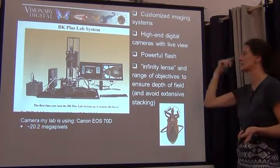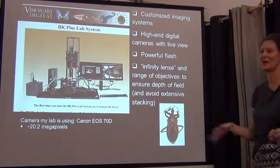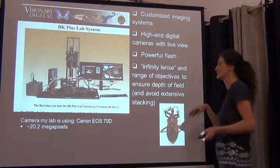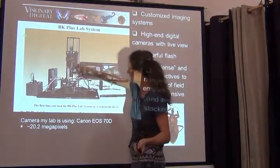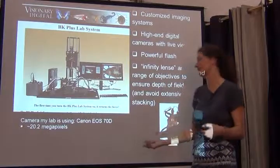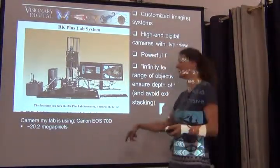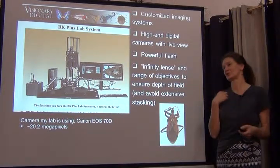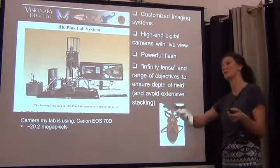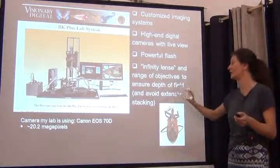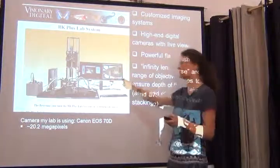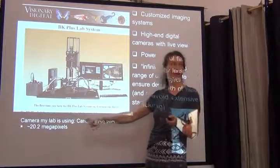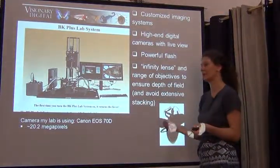The Visionary Digital integrated imaging systems — the company changed its name a few times, but has been out there for about 15 years. They are dedicated, customized imaging systems that typically come with either a Canon or Nikon camera. The camera we're using at the moment is a Canon EOS 70D, which works really quite well. When I purchased that system in 2007, the cameras were extremely expensive and didn't come with a live view option, so you needed an extra little camera to be able to focus while looking at a computer screen.